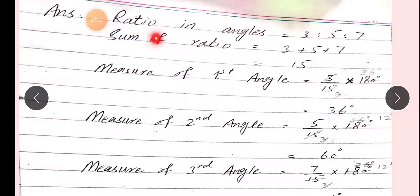To sum of ratio karte hain: 3 + 5 + 7 = 15. Ab measure of first angle: ratio 3, divide by 15, multiply by 180. Sum of interior angles = 180 degrees. Sum of ratio = 15.